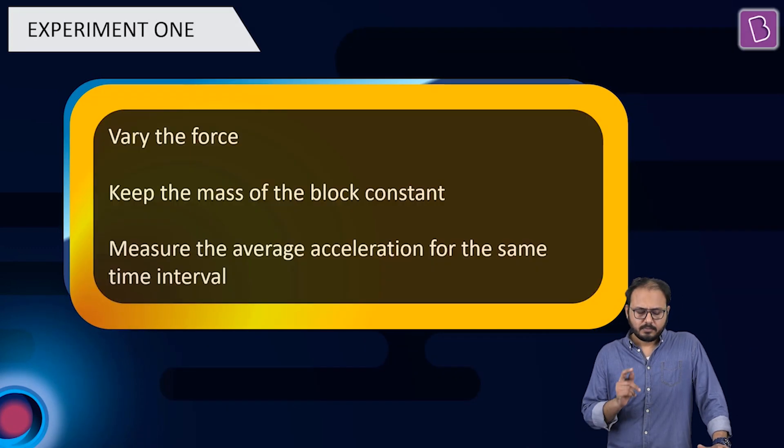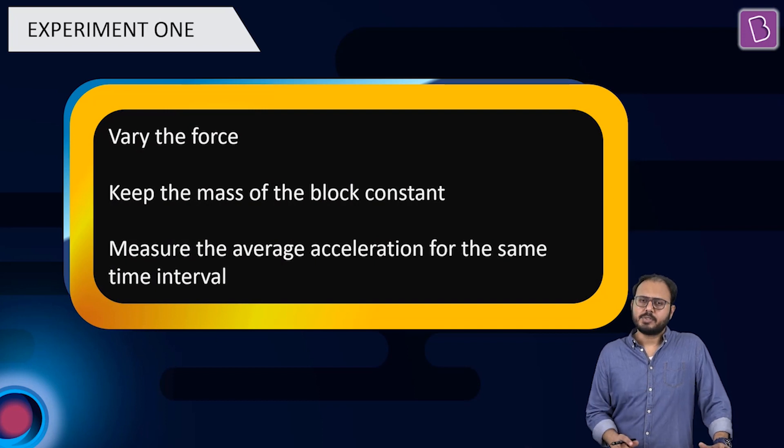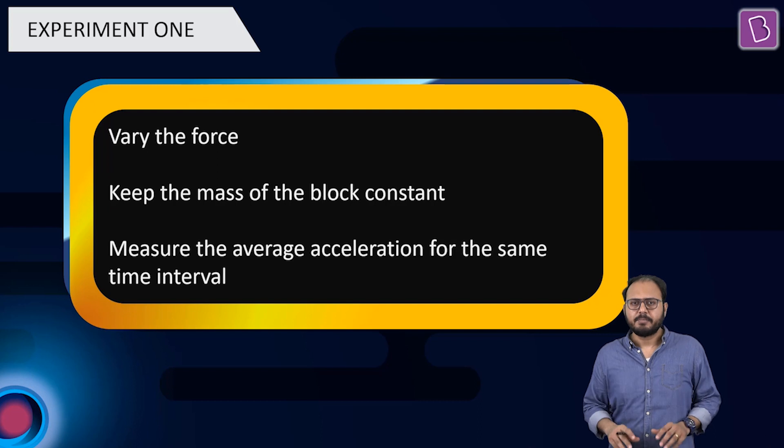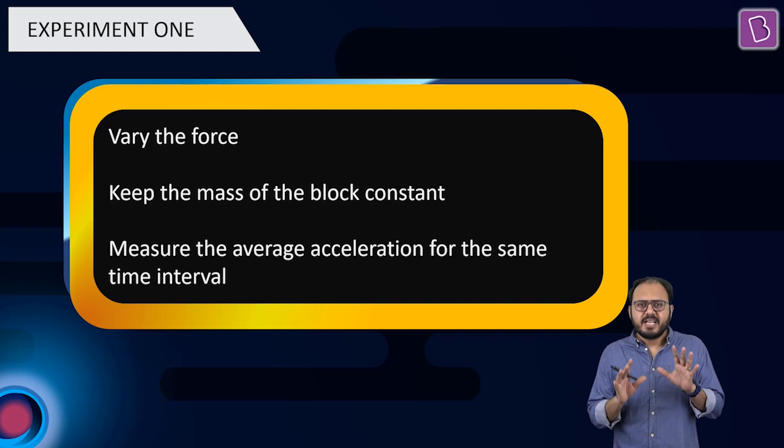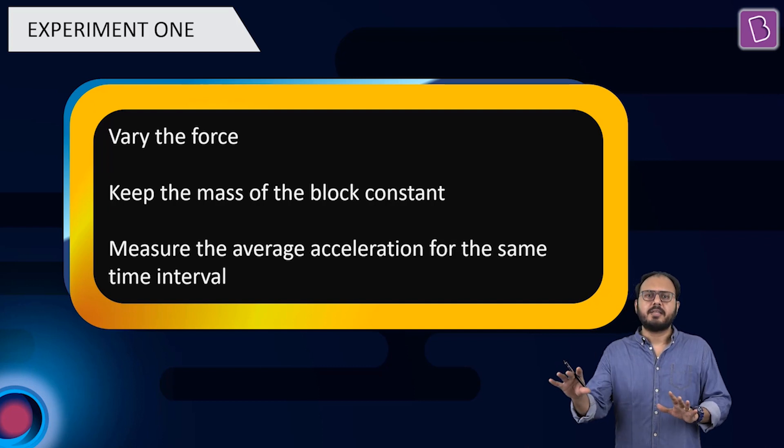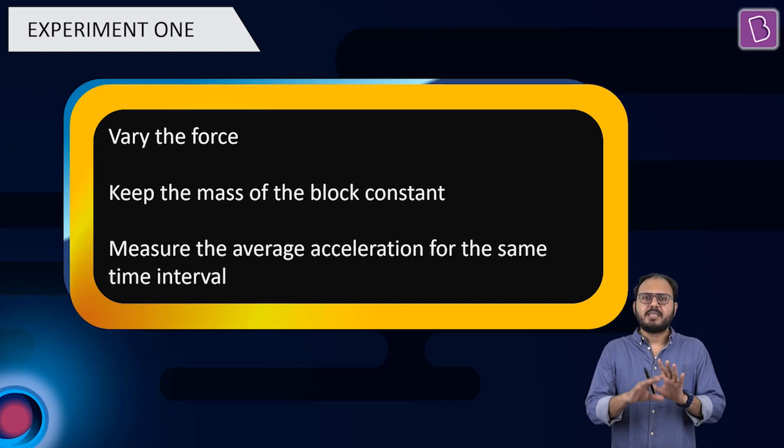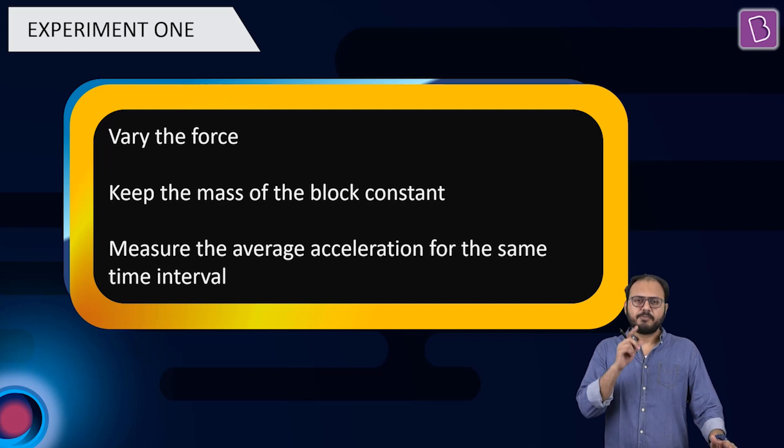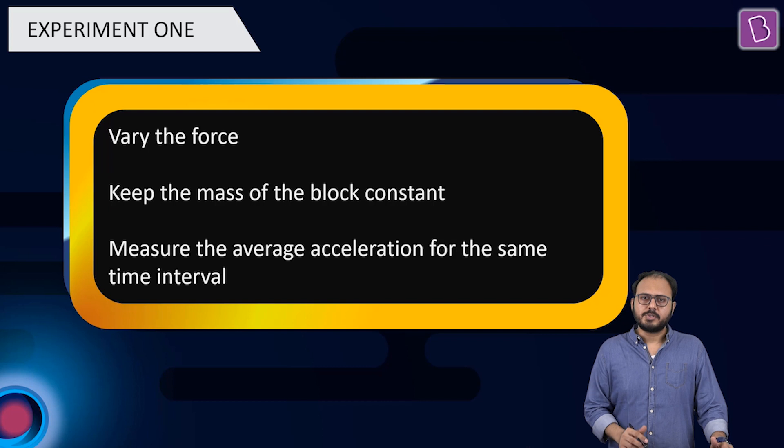Experiment number one. I vary the force. How do I vary the force? Imagine the force gun has maybe a dial or a gauge to increase or decrease the force. But I keep the mass of the block constant. Understand something. You are playing with mass and the force. So what you are going to do is, you are going to keep some things constant and vary another thing.